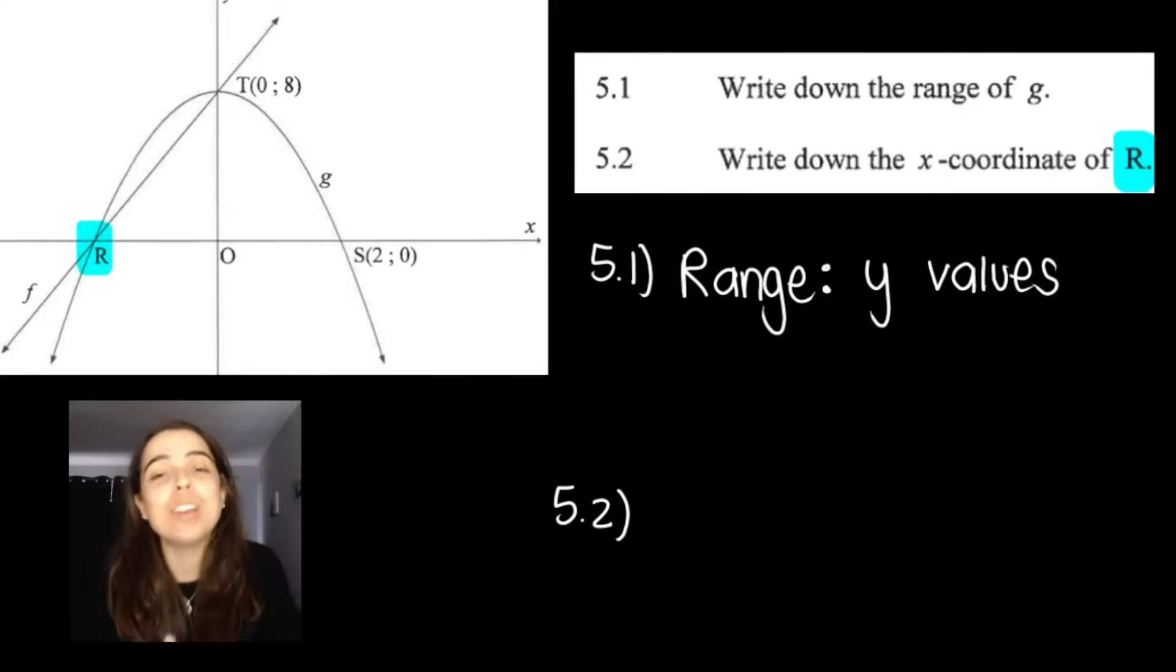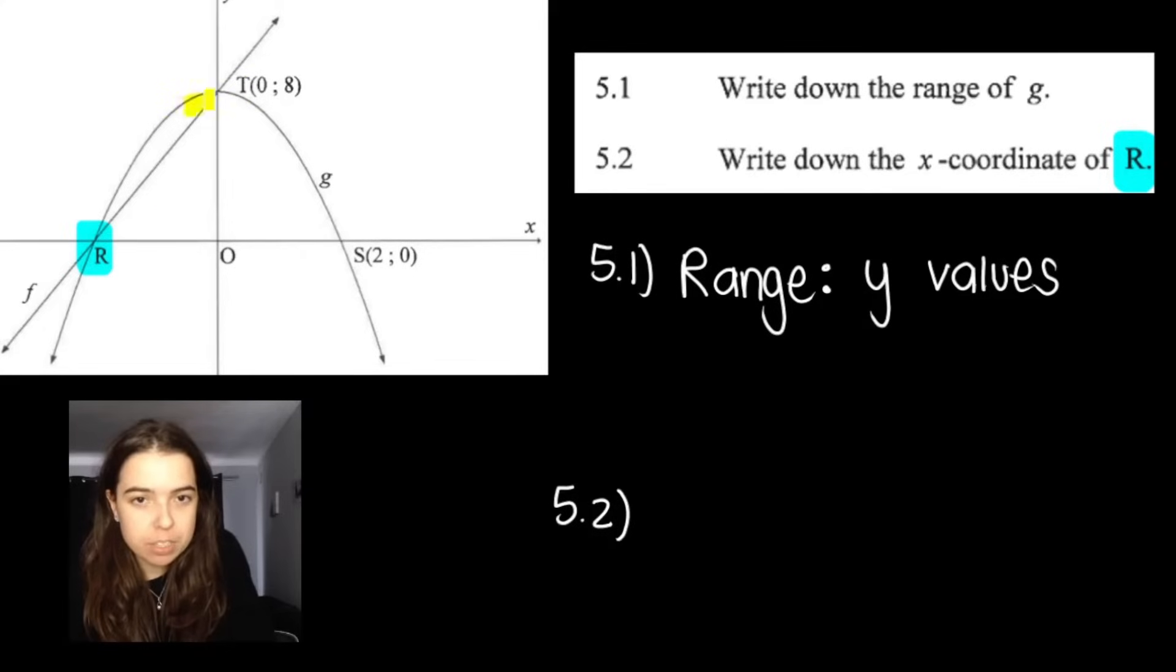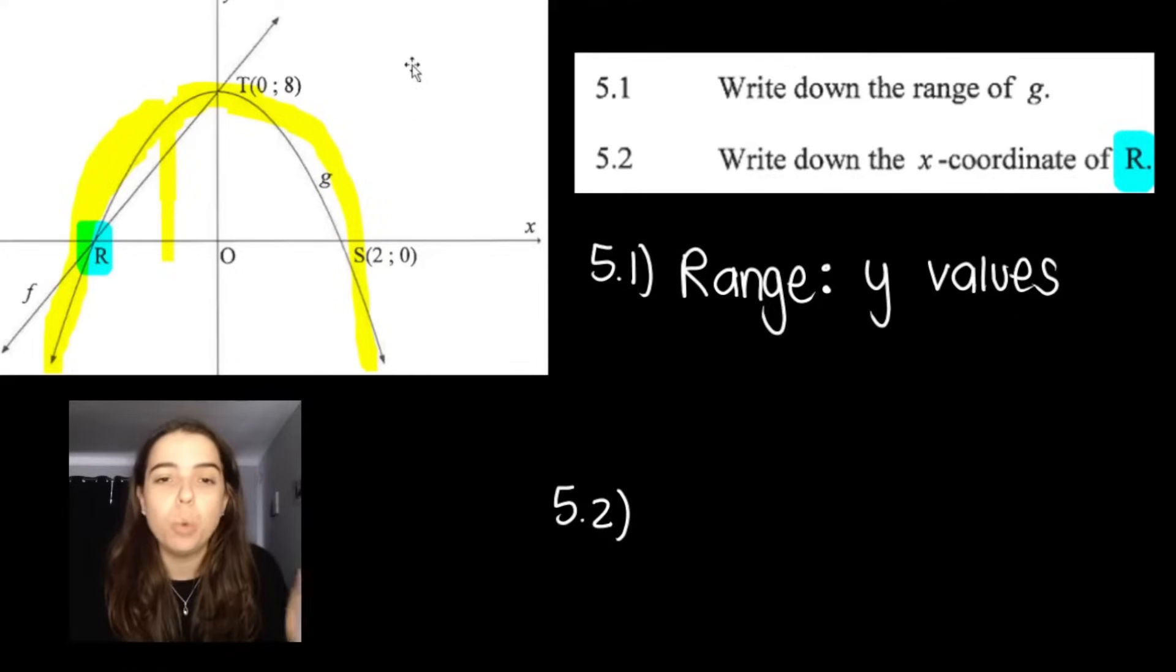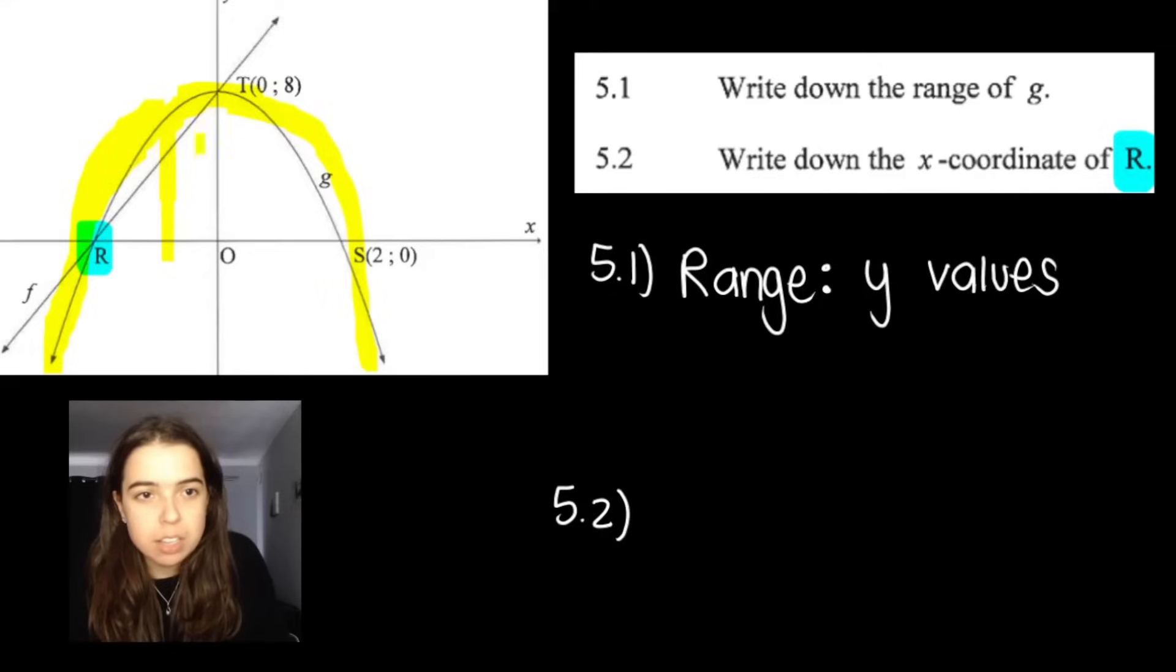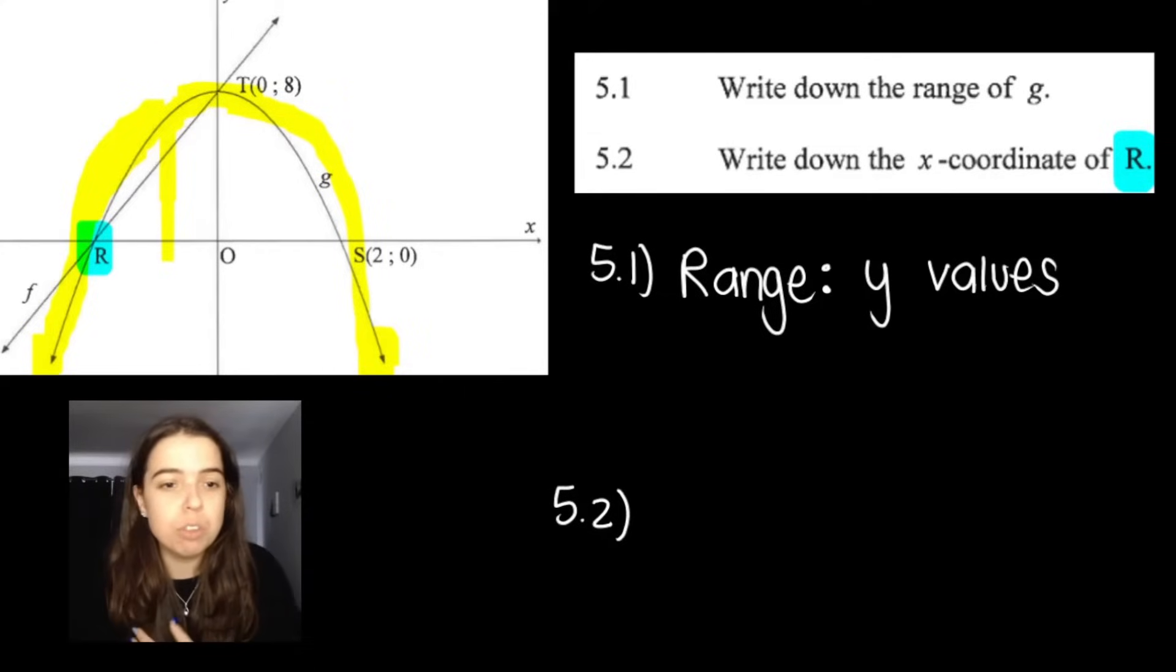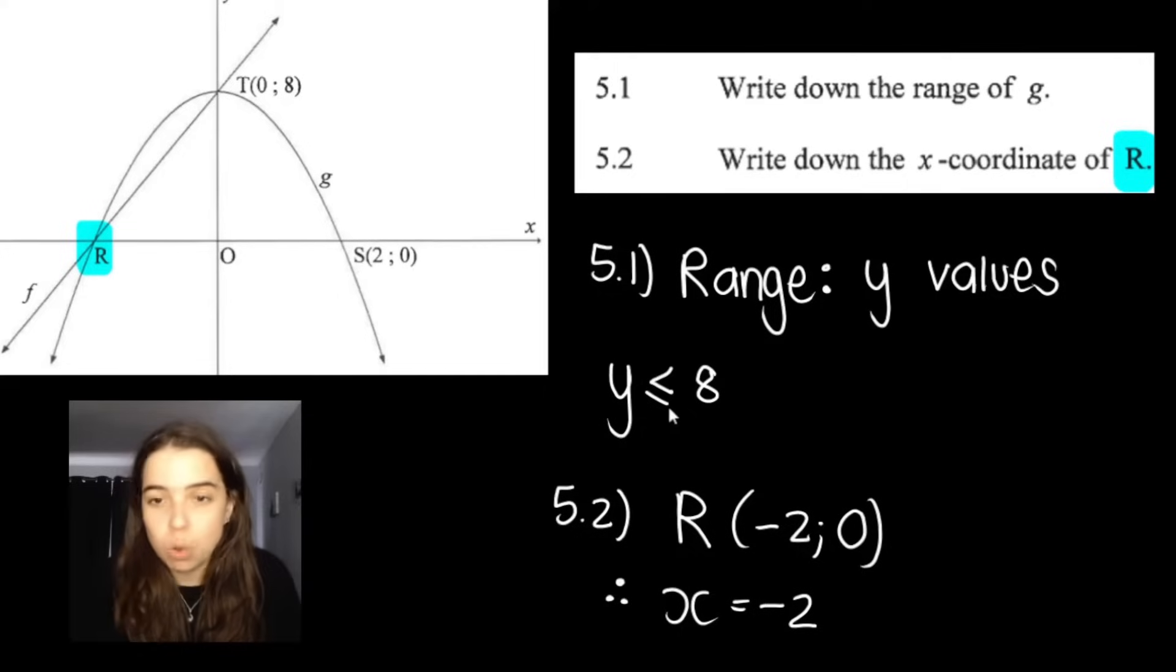Right, 5.1 asks for the range of g. Now remember, g, our function g is our parabola. Range is just a word to describe all the output values, so the y values. If you look at the function, we can see that the y values go all the way down here into the negatives, and the highest the graph goes in terms of y values is 8. So the answer for that is y will be less than or equal to 8.